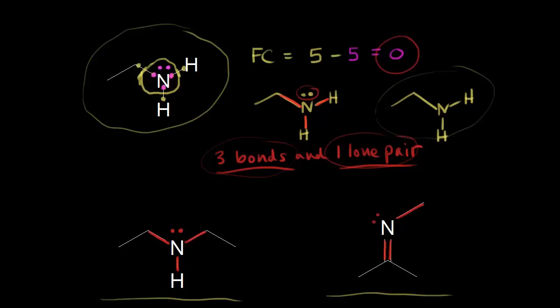Notice that this gives nitrogen an octet of electrons — counting two, four, six, and eight. So nitrogen has an octet. Remember, you could just leave off that lone pair of electrons, and it's assumed that if we know nitrogen has a formal charge of zero, there is a lone pair — we just didn't want to take the time to draw them in.